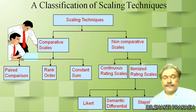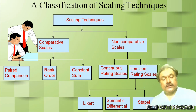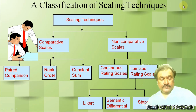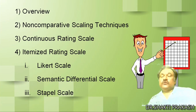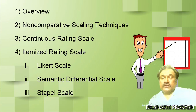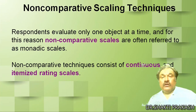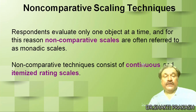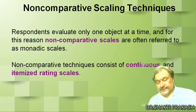Now, what is a non-comparative scale? It is a continuous rating scale, also called a graphical scale, and an itemized rating scale. The itemized rating scale is again divided into Likert, Semantic Differential, and Staple scales. In non-comparative scaling technique, the respondent evaluates only one object at a time, and for this reason non-comparative scales are often referred to as monadic scales. Non-comparative technique consists of continuous and itemized rating scales.